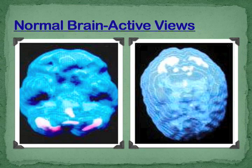What a SPECT scan does is it takes up a nutrient. So these aren't actually holes in the brain — these are areas of the brain that aren't being perfused very well. There's not enough nutrient going into them, so they're underactive. There's brain tissue there; that brain tissue just isn't working very well.